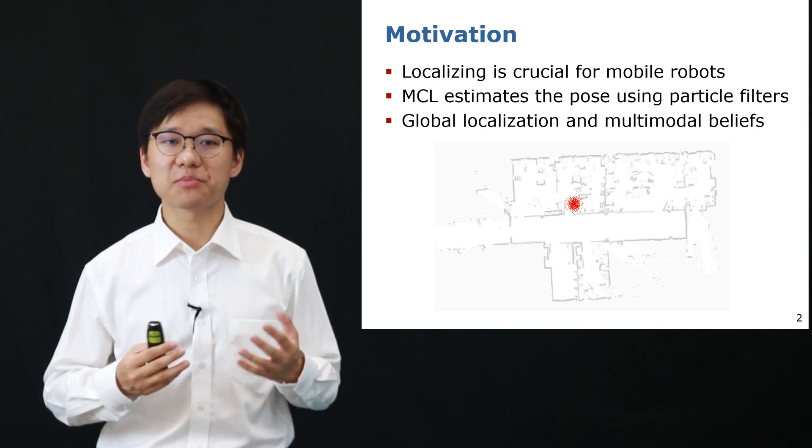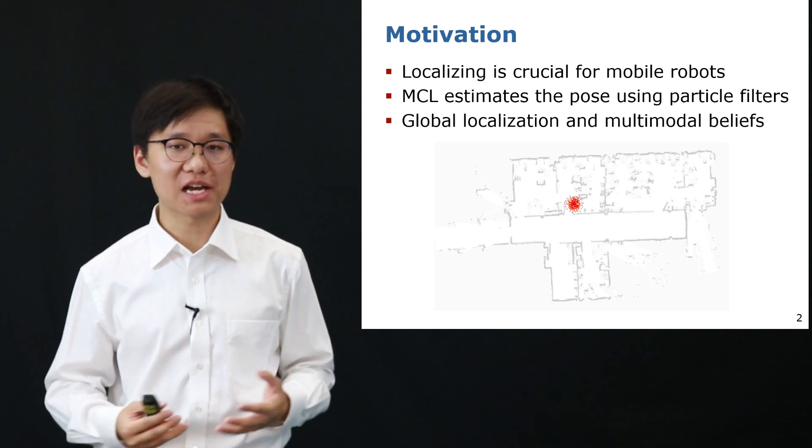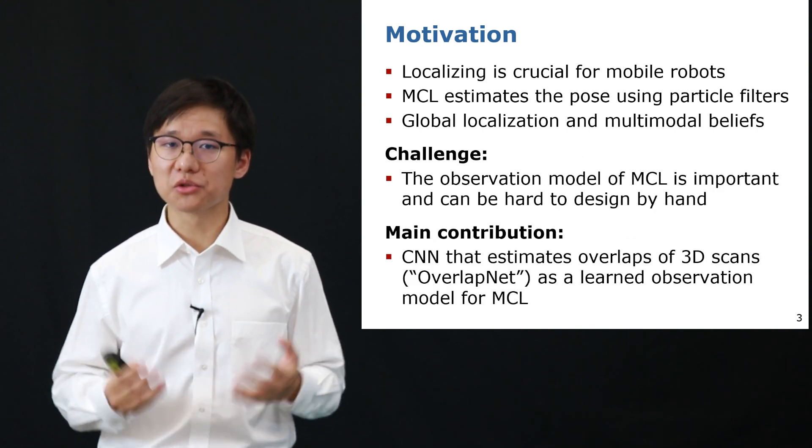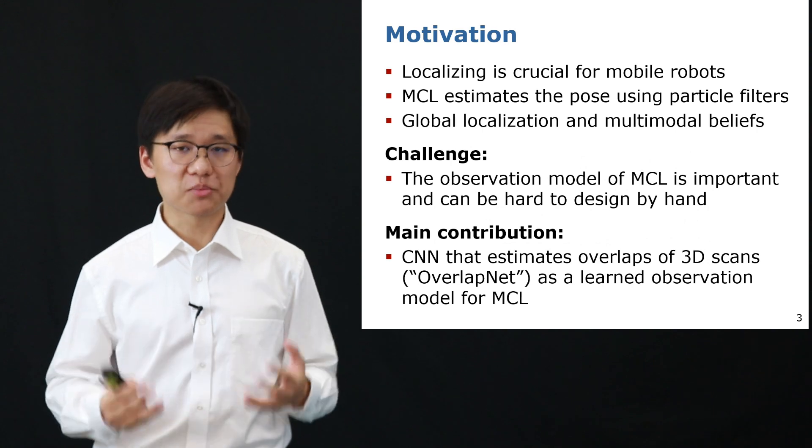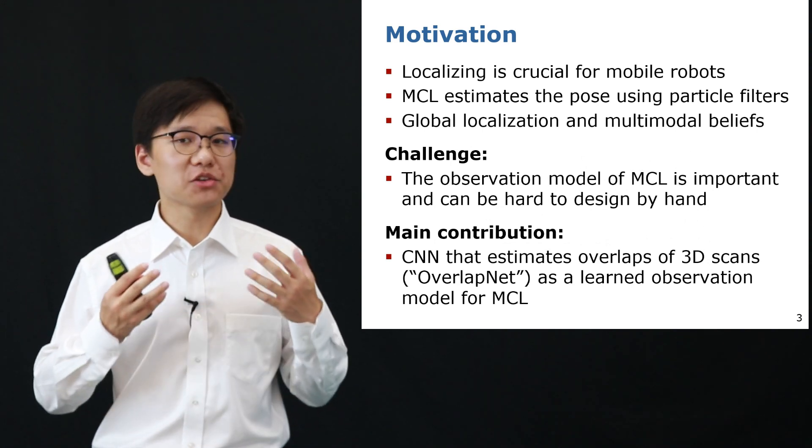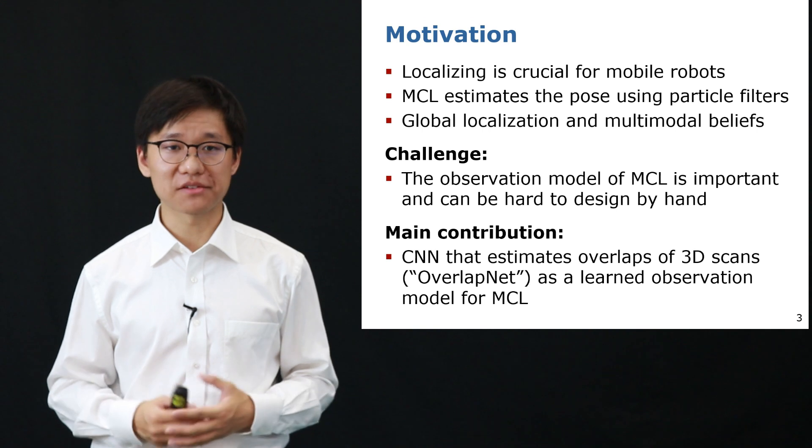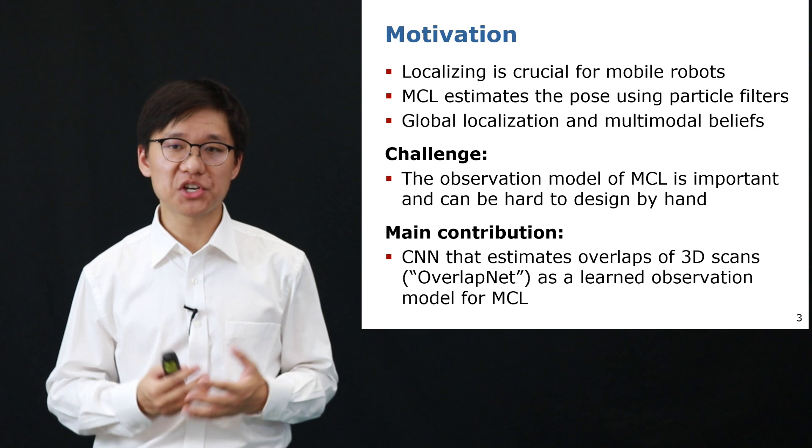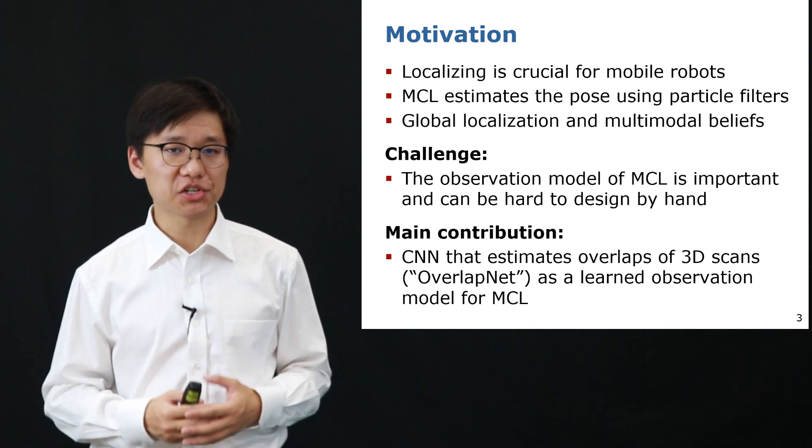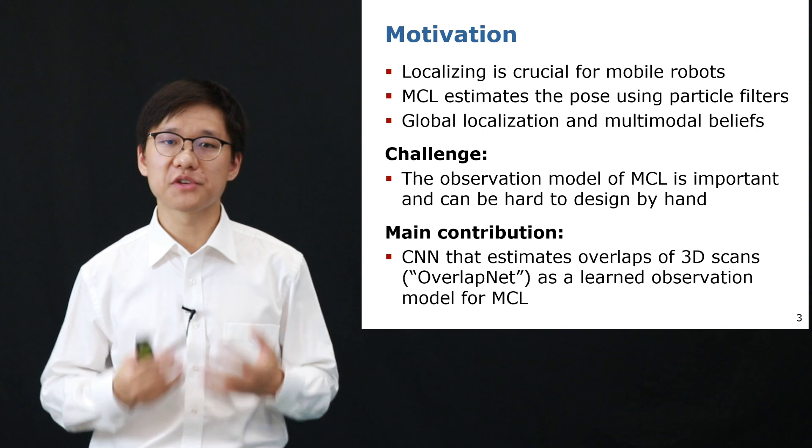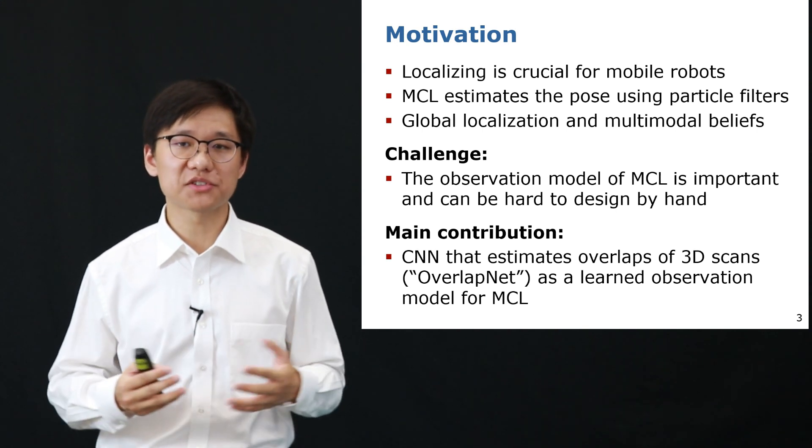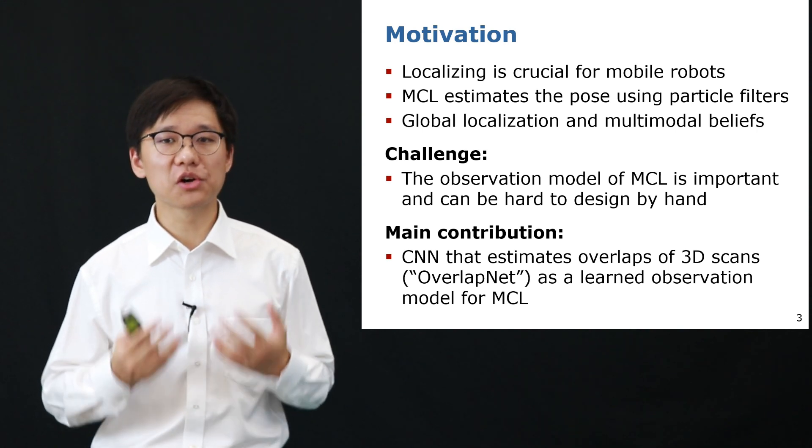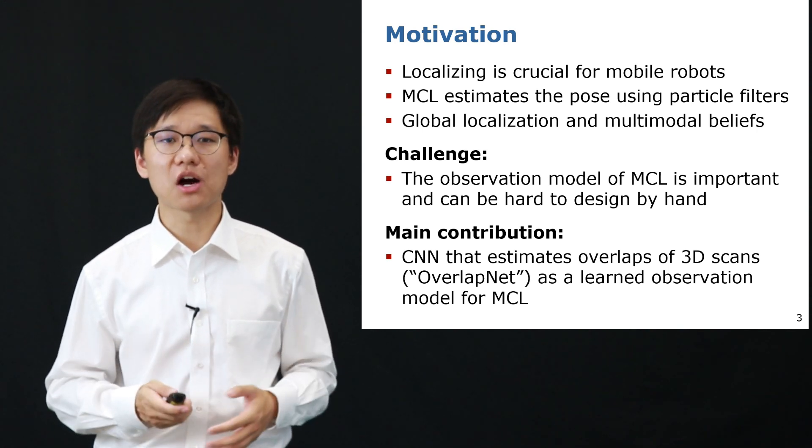Monte Carlo localization has been successfully used for global localization with multi-modal beliefs. The challenge is that the observation model is very important but usually can be hard to design by hand. The contribution of this work is that we proposed a learning-based observation model for Monte Carlo localization using the estimated overlaps of 3D LiDAR scans from our previously worked OverlapNet. In the end our methods can achieve good global localization results in changing outdoor environments.